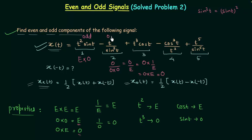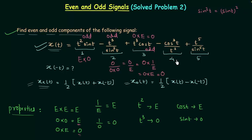Third term: t³ cos(t). t³ is odd and cos(t) is even, so odd × even = odd. Therefore t³ cos(t) is part of the odd component.